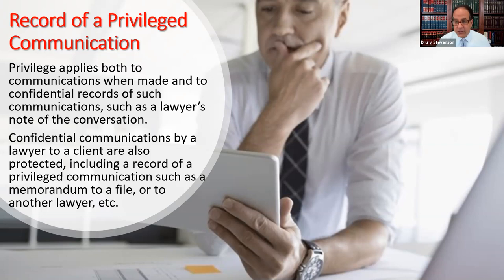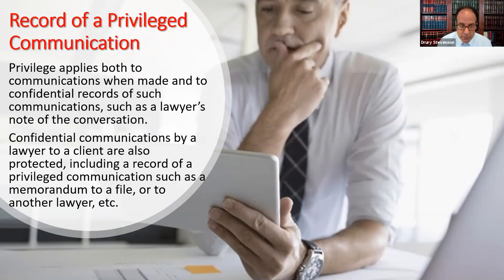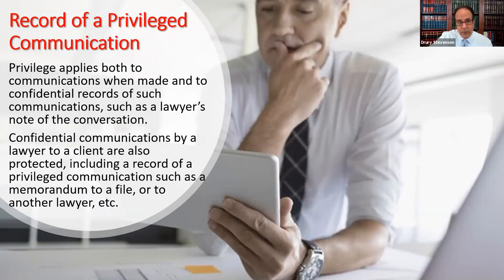For example, you answer the phone, have a private conversation with your client, then sit down and take notes — handwritten, a voice recording memo, or a typewritten memo to your file. Those notes record the contents of the conversation and will be privileged. Also, privilege is bidirectional: what the lawyer says to the client is privileged, what the client says to the lawyer is privileged, and that includes a memorandum to a file or reporting to another lawyer what was said.